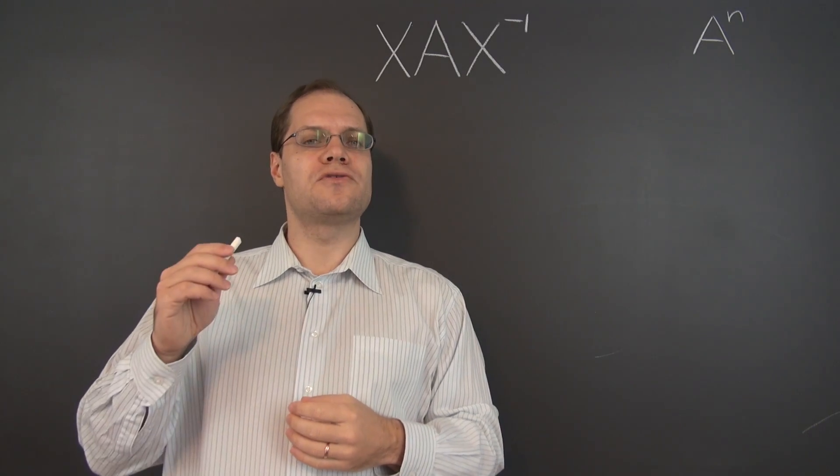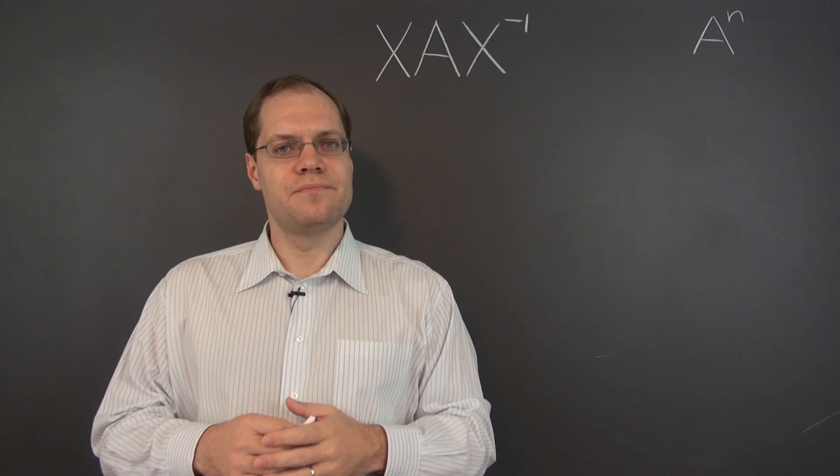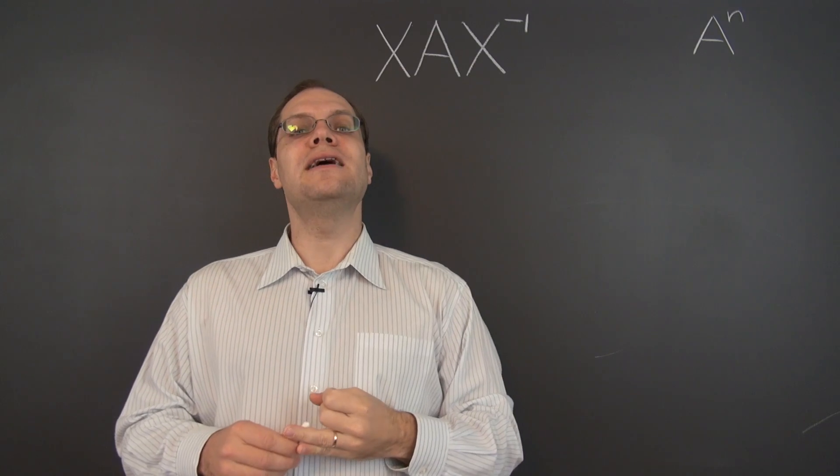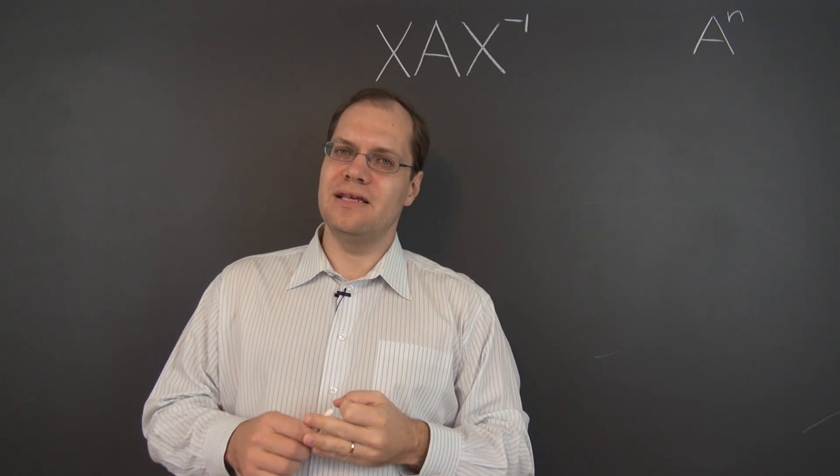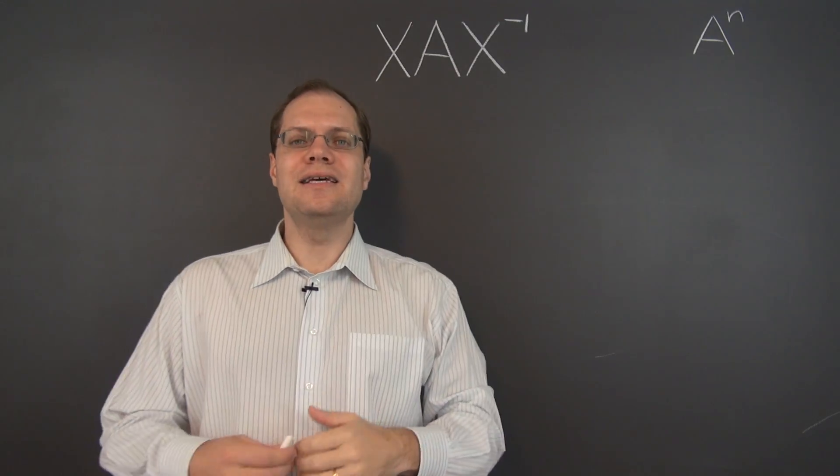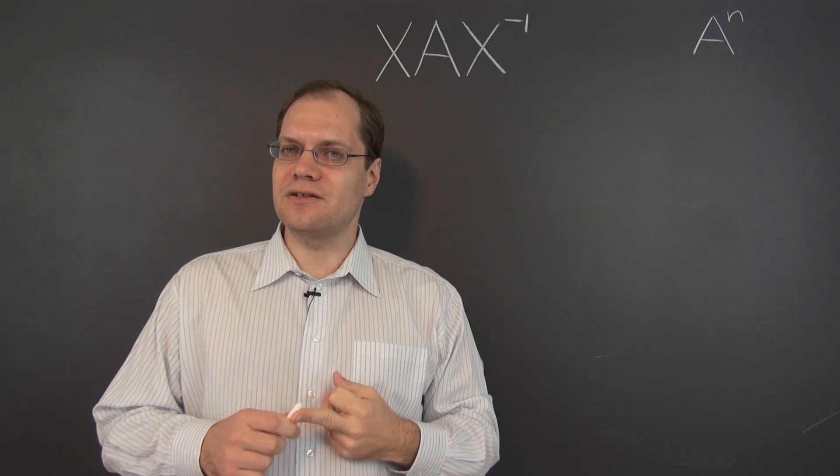And this rule works for all integer powers of n, positive and negative. So as far as A to the n is concerned, identical eigenvectors, related eigenvalues. In this video, we'll consider a different transformation of A that leads to a new matrix that has the exact same eigenvalues and related eigenvectors.